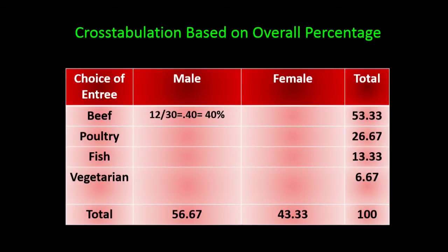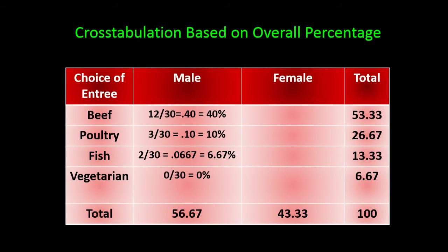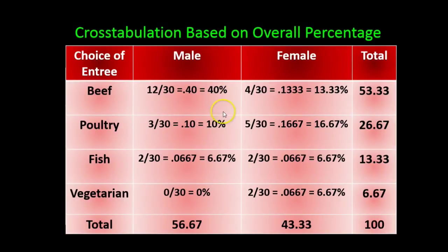Now let's do that for the males who ordered poultry, fish, and vegetarian. There were 3 males who ordered poultry: 3 divided by 30 is 10 percent. Next we have 2 males ordering fish: 2 divided by 30 is 6.67 percent. And the males who ordered a vegetarian entree were none, zero, so 0 divided by 30 is 0 percent. Adding these up: 40 plus 10 plus 6.67 gives 56.67 percent, which is the column total for males.